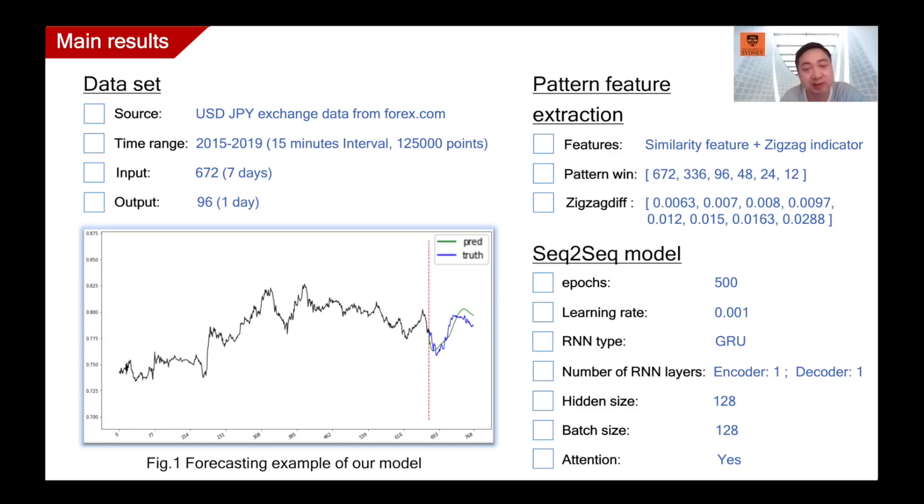We can see that the prediction represented by the green line is very similar to the ground truth represented by the blue line in both scale and shape, indicating that our model has the initial level of ability in forecasting a relatively longer future sequence. It is important to note that this is one of the best predictions that we choose for many forecast results.